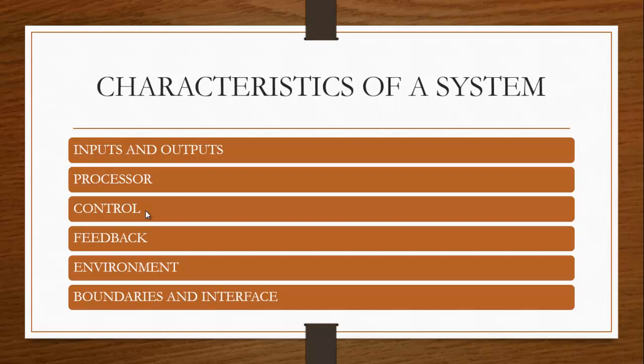Another characteristic is the environment. The environment is the external element that affects the system — sometimes referred to as the supersystem within which an organization operates. The environment determines how a system must function and to a large extent how the system will work to produce output towards achieving organizational goals. The environment is therefore a very important characteristic of a system.